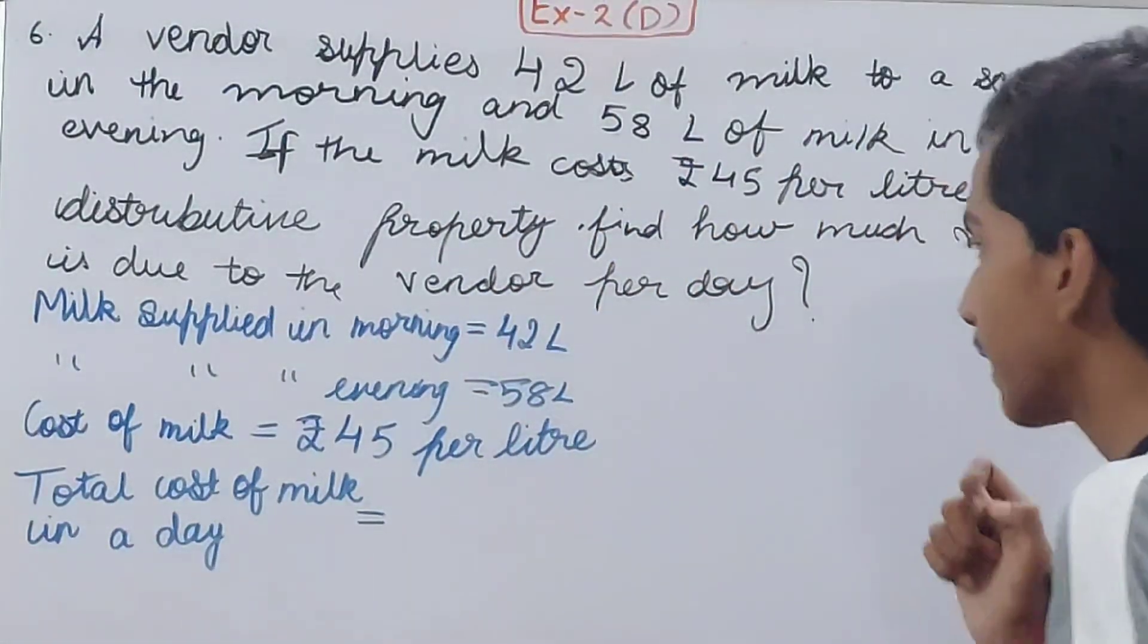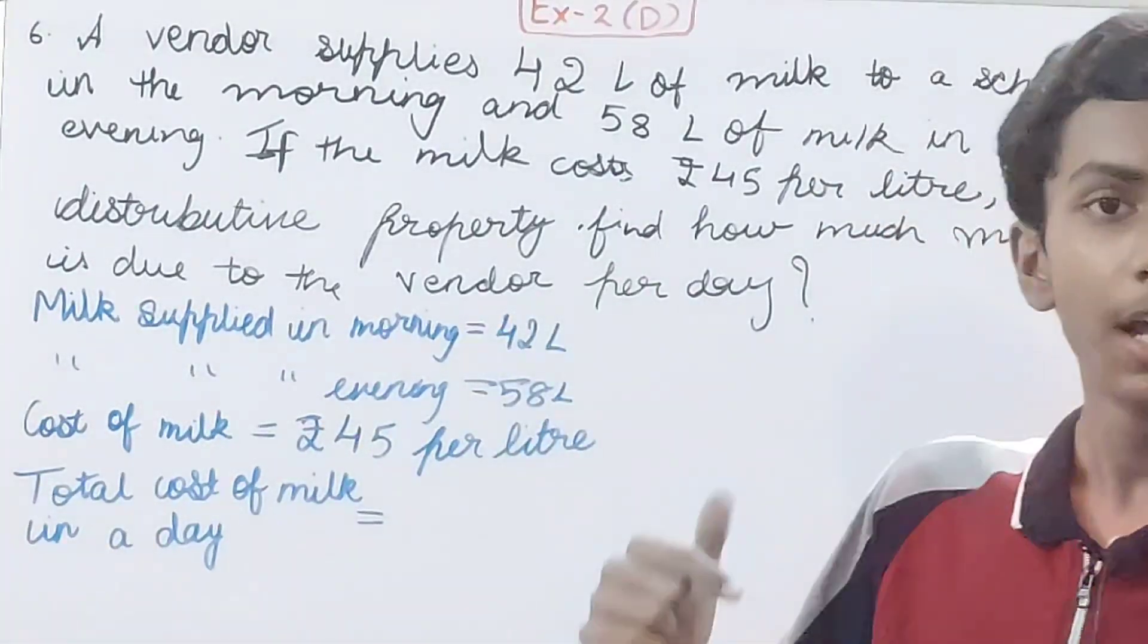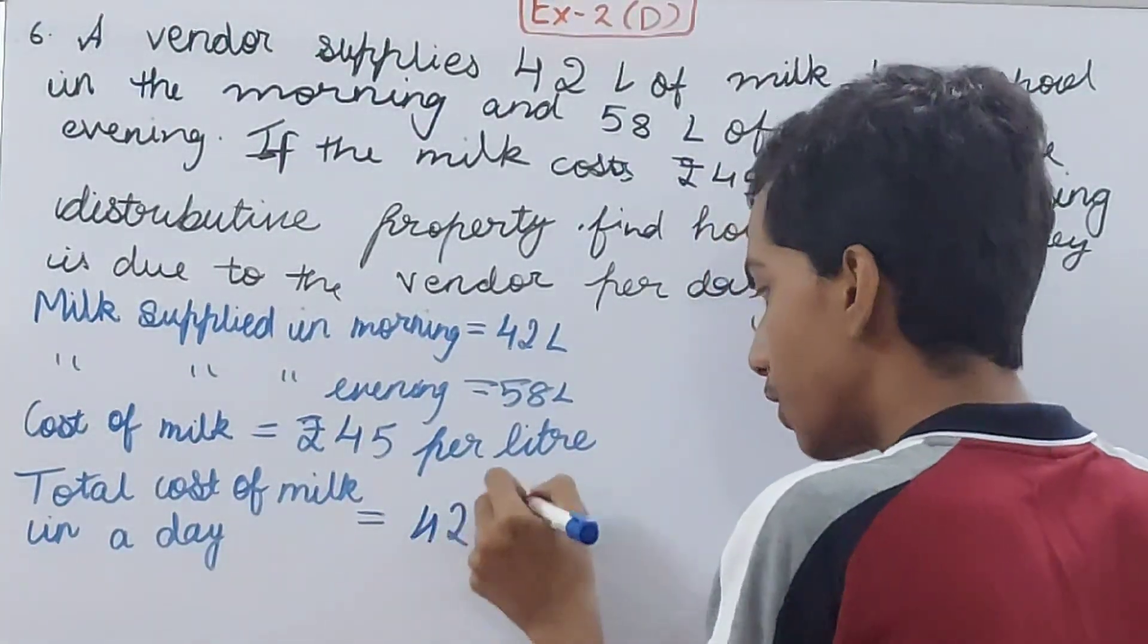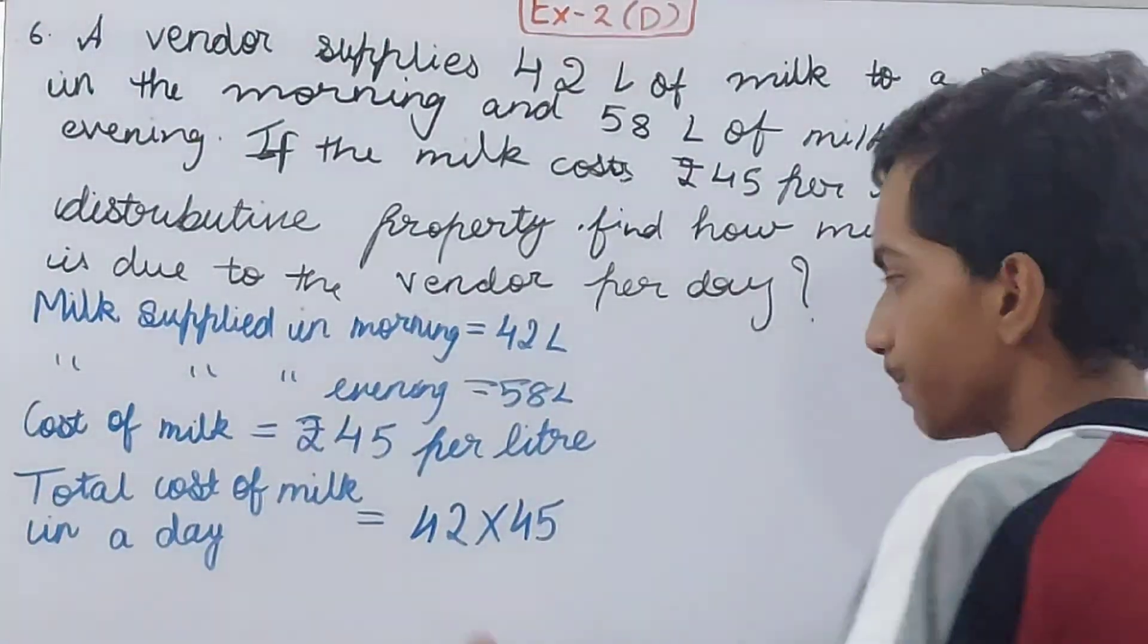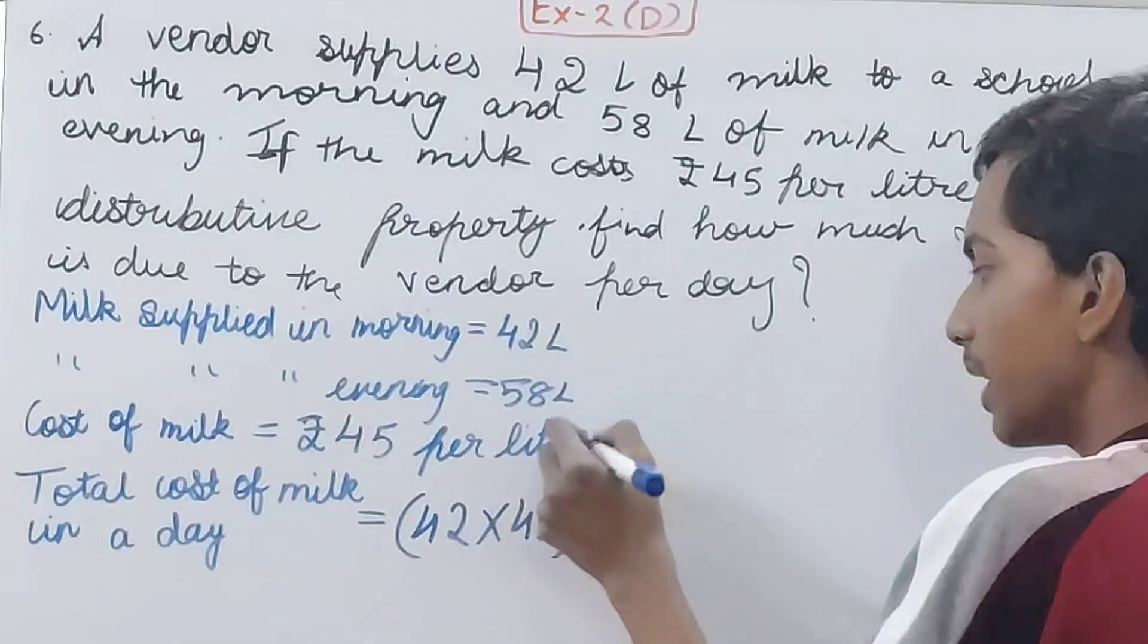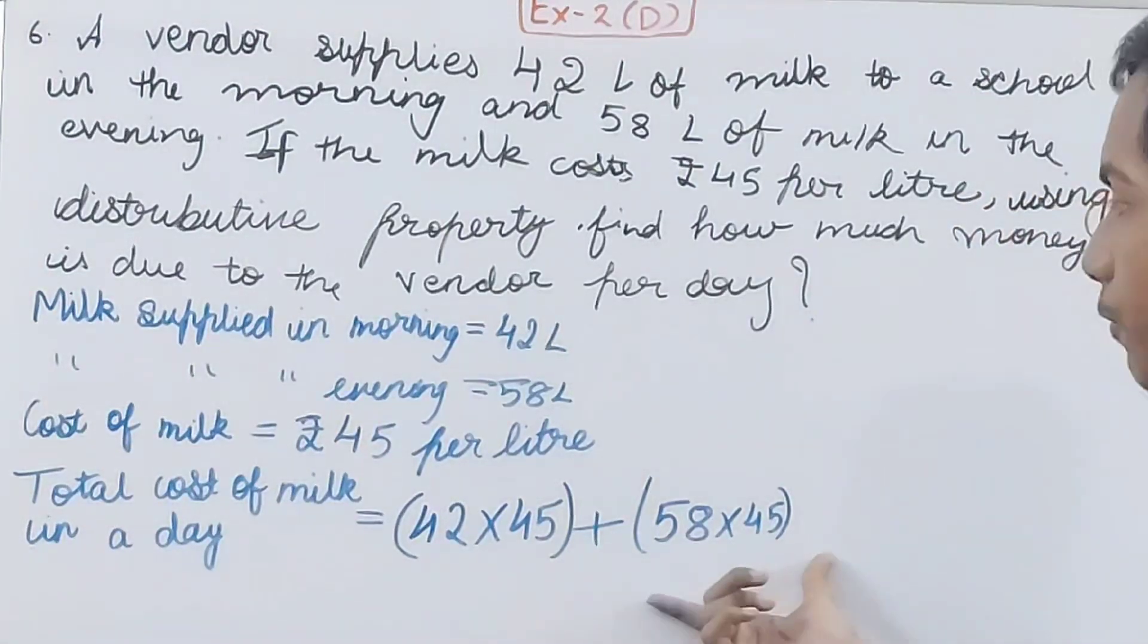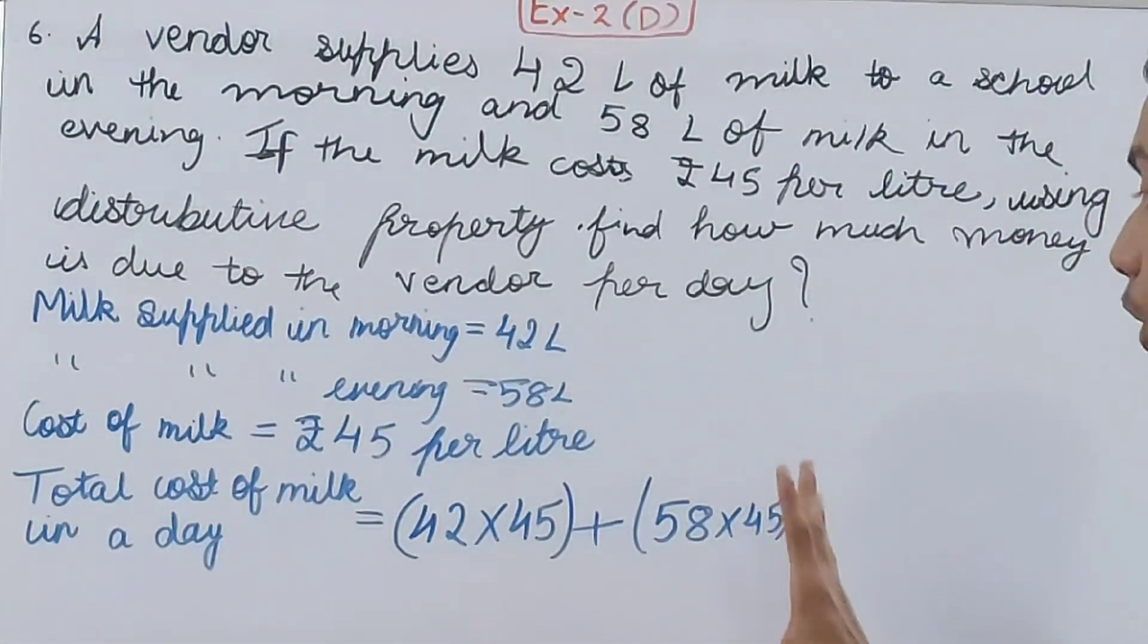This will be what? Now see, you have to use simple calculations. He supplies the milk two times - in the morning and in the evening. So in the morning he supplies 42 liters, so 42 into 45, this is the cost in the morning. Plus, in the evening he supplies 58, so 58 into 45, this is the cost of the milk in the evening. So this is the total cost in rupees.